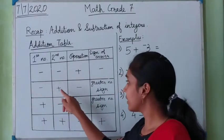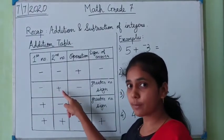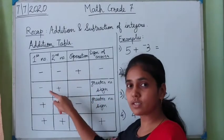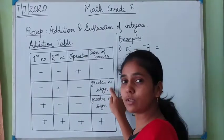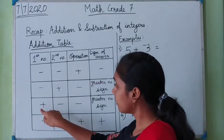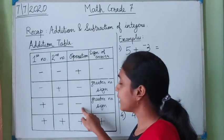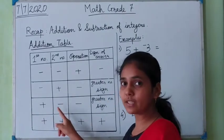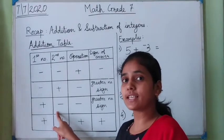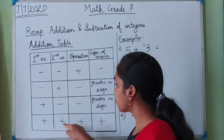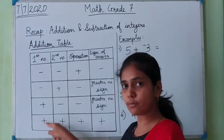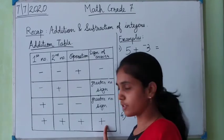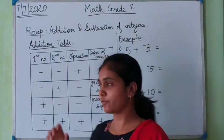If the first number is negative and the second number is positive, you have to subtract those numbers. The sign of the answer will be the greater number's sign — you check both numbers and whichever is greater, that sign will be the sign of the answer. Similarly, if the first number is positive and the second number is negative, the operation is subtraction and the sign of the answer is the greater number's sign. If both numbers are positive, you add them and the sign of the answer will be positive.